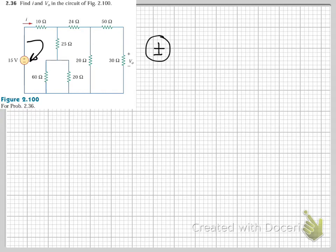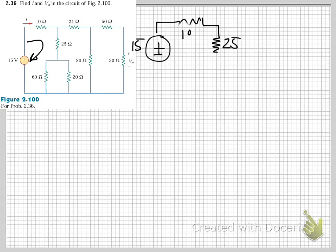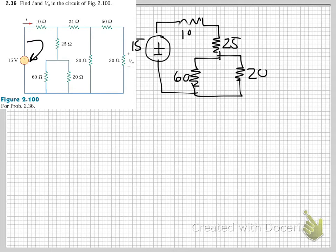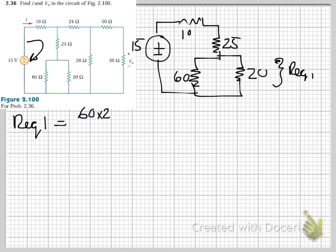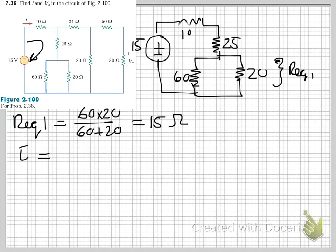The loop has our 15 volt source, our 10 ohm resistor, our 25 ohm resistor, and then the 60 and 20 ohm resistors. You could have simply computed R_equivalent_1 as 60 in parallel with 20: (60 × 20) / (60 + 20) = 1200/80 = 15 ohms. Then said that i = 15 × 1/(10 + 25 + 15).